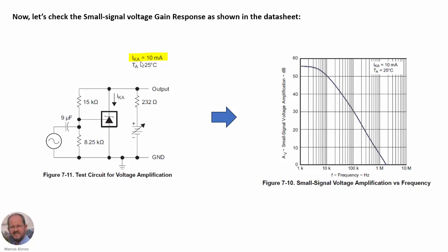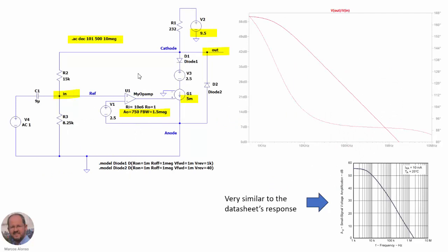The cathode-anode current is 10 mA, which is the reason they use an adjustable voltage source here — so we can adjust the current circulating into the cathode of the device. They inject an AC signal using a series capacitor. The small signal gain is given by the amplitude of the small signal at the output divided by the amplitude of the signal at the input.